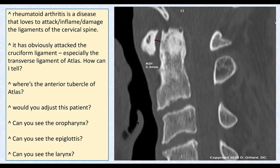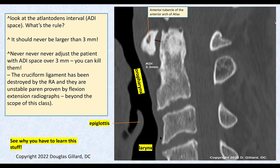The laryngeal pharynx would be back here, but it's closed off — the upper esophageal sphincter is always closed so you don't normally get air going in. So you guys could handle that on a test: oral pharynx, larynx, epiglottis, and hopefully the ADI space.